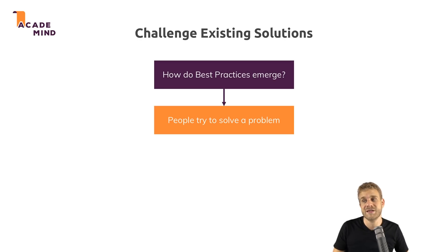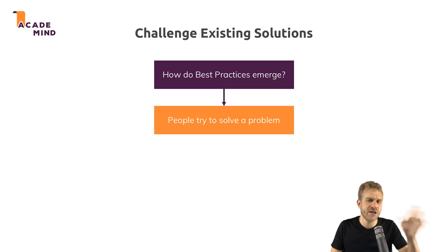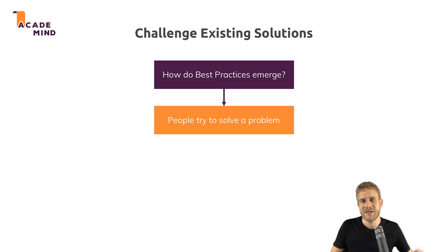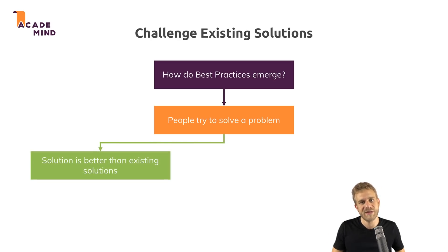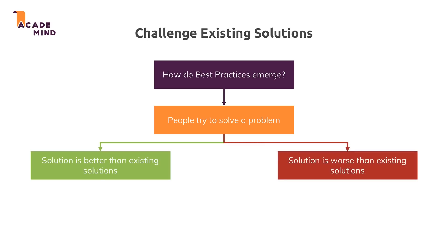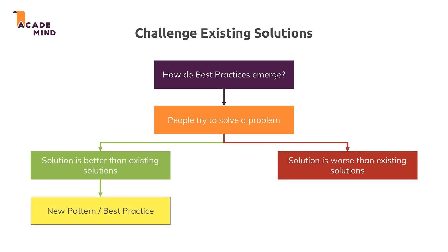So that is how best practices emerge — you question existing solutions. You rarely will have the case that no solution exists for a problem. Often you have some kinds of patterns, but then you can question them. Either you find a solution that works better than the existing solution, or you have one that is worse. In the better case, a new best practice might emerge. And of course, that always gets validated because you might share your solution on blog posts, and if it's really good and solves a common problem, other people might pick it up.